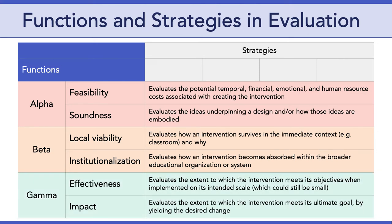The third stage is gamma testing, and this takes place with a nearly final or at least highly stable version of your intervention. Questions at this stage focus on your intervention's effectiveness and impact. Evaluating effectiveness involves assessing the extent to which the intervention meets its objectives when implemented on its intended scale — effective interventions meet their goals under regular, real-world conditions. In addition, evaluating impact focuses on the extent to which your intervention meets its ultimate goal by yielding the desired change.